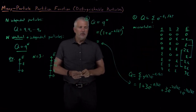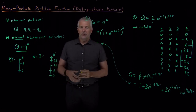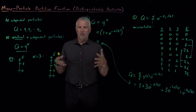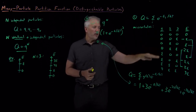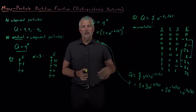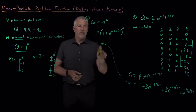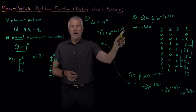Imagine the difference if we were calculating the partition function not just for three molecules, but for a box containing Avogadro's number of molecules. There's no way we could possibly write out all the different microstates, but we could write out the individual partition function for one molecule and raise it to a large power like Avogadro's number.